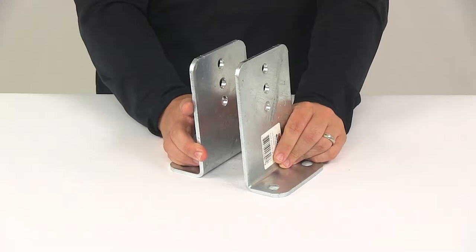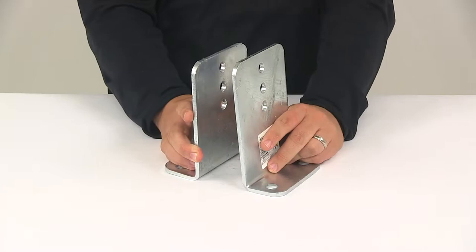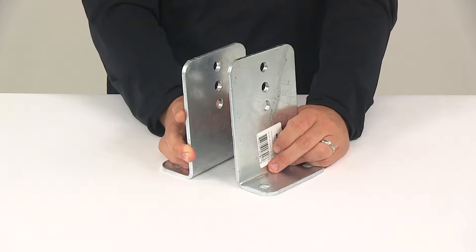Today we're going to be taking a look at the CE Smith Heavy Duty Vertical Bunk Brackets. These heavy duty brackets let you mount a bunk board on your boat trailer. They're ideal for big bunk boards such as a three by eight or four by eight.